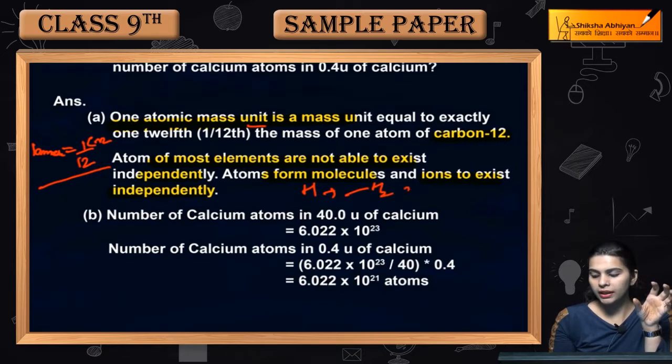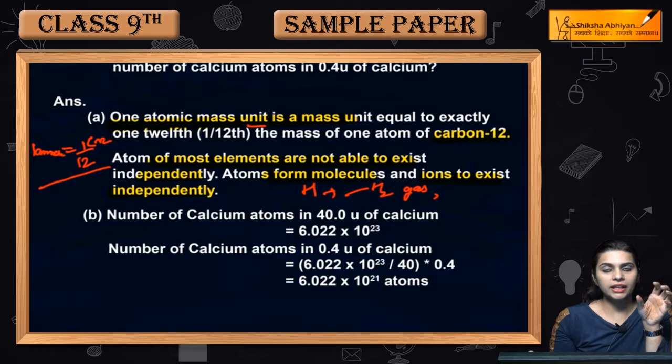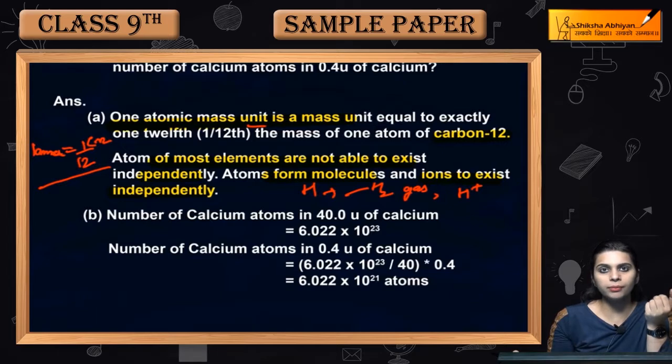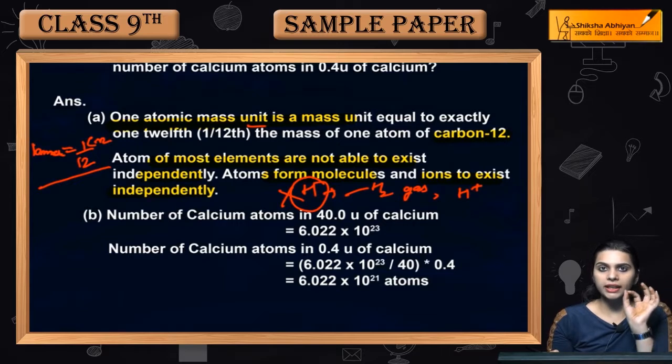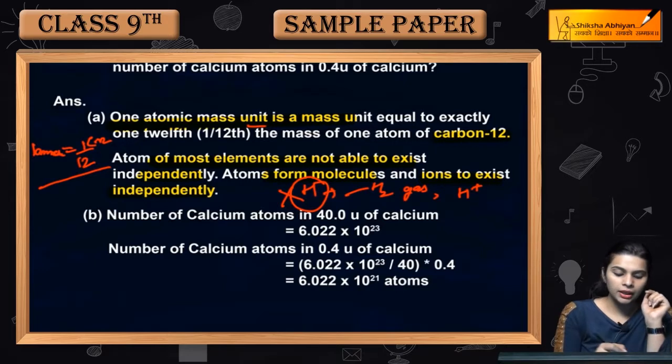For example, our hydrogen is hydrogen. It never exists in the form of H. It will be in the form of H2, it will be in the form of hydrogen gas, or it will be in the form of hydrogen ions. So H atom never exists in the form of H atom. So in this way, what is 1 AMU, you know what is atomic mass unit and how do our atoms exist.